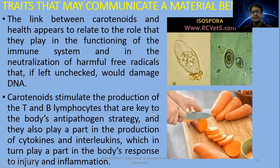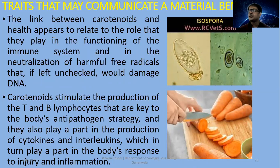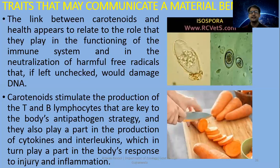But how does plumage change? There is a link — and that link is with carotenoids. Carotenoids and health are linked. Carotenoids basically belong to a lipid category of terpenoids, which is a steroid type. They may be helpful in boosting the immune system — they play a role in immune system functioning and in the neutralization of harmful free radicals, which, if left unchecked, would damage DNA. Basically, they help maintain better health and immune system conditions.